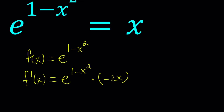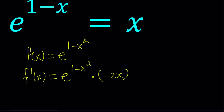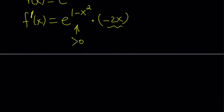One thing to keep in mind: e to the power 1 minus x squared, for real x, is always going to be positive. So the sign of f prime is going to be determined by negative 2x. This means if x is positive, the derivative is negative; otherwise it's positive.